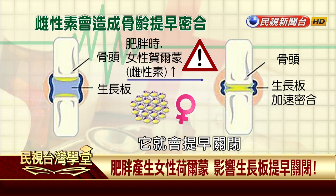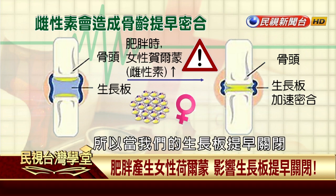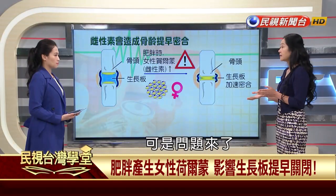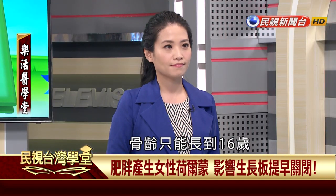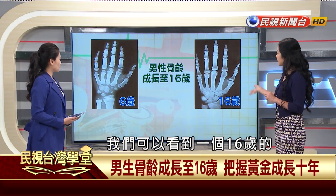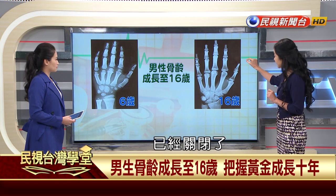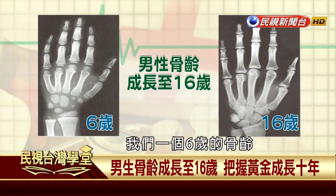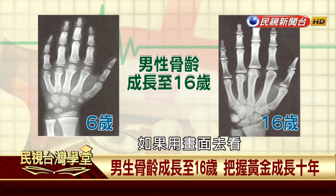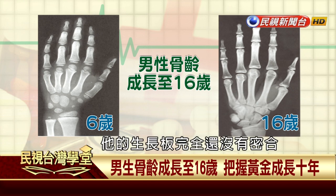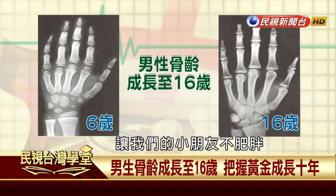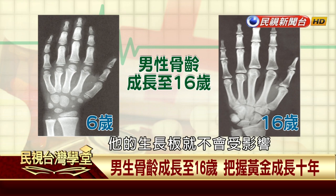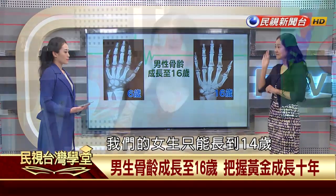肥胖後，身體會儲存過多女性荷爾蒙，而女性荷爾蒙是骨齡的天敵。它會讓生長板提早關閉，而身高完全是由骨頭堆積而成的。男生骨齡只能長到16歲，16歲生長板完全關閉；女生只能長到14歲。一旦生長板提早關閉，就長不高了。